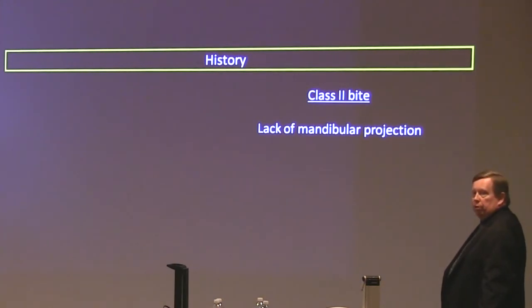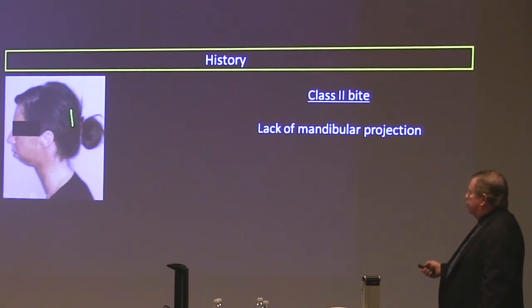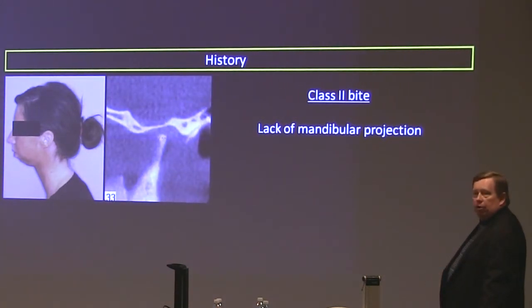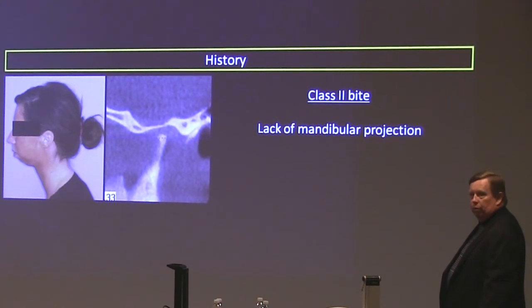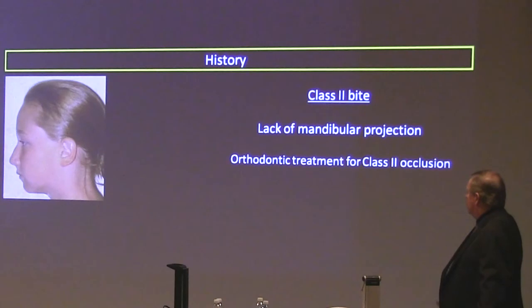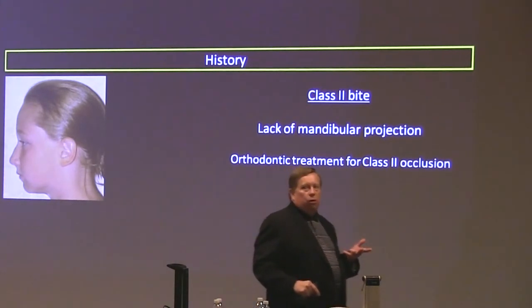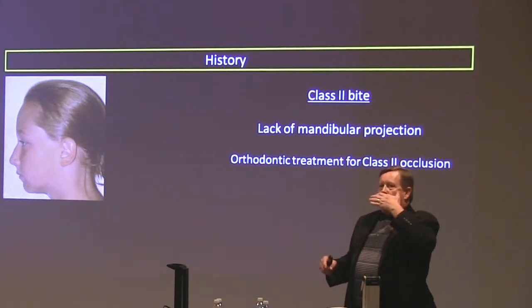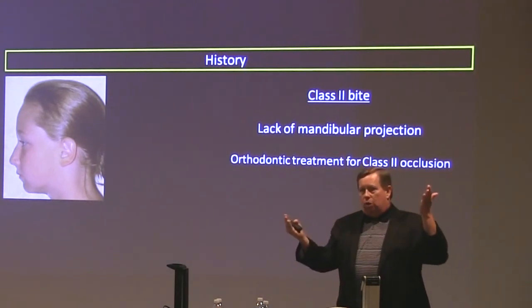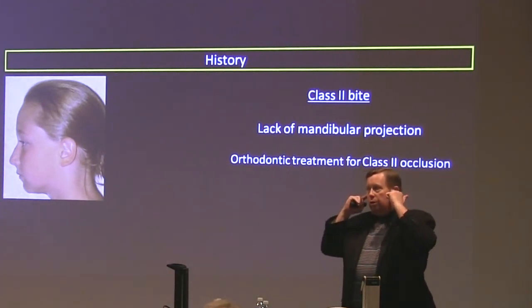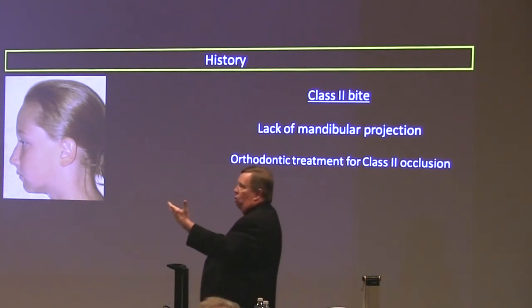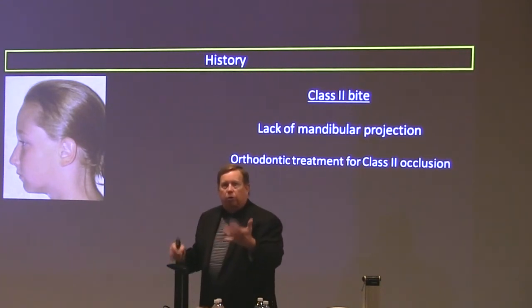A Class 2 bite with lack of mandibular projection — you can see it right away looking at the chin. When I hear a patient say they had headgear, functional appliances, or upper first premolars taken out, I automatically think loss of dimension in the joint. Headgear tries to restrict upper jaw growth and let the lower catch up. Why does the lower need to catch up? Because there's been a dimensional loss in the joint. Functional appliances try to bring the lower jaw forward for the same reason — loss of dimension in the joints.